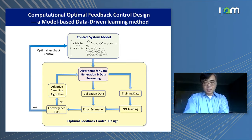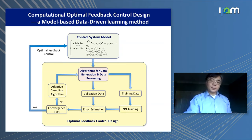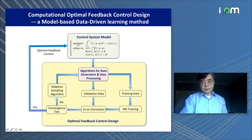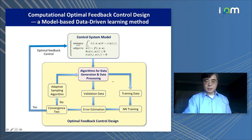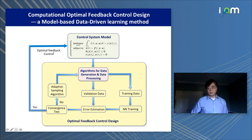Motivated by the recent success of using neural networks for solving HJB equations, we propose a model-based and data-driven learning method for the computation and design of optimal feedback control. The idea is illustrated in a diagram. In this method, we use the control system model together with some algorithms to generate data. Those data enable an iterative learning process to train the neural network, and in the end we get the optimal feedback control represented using this neural network.